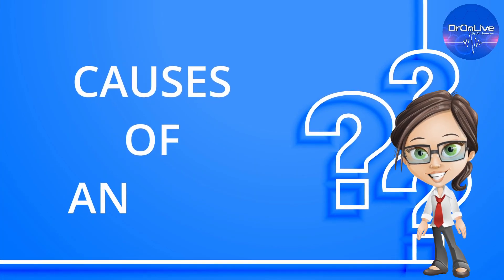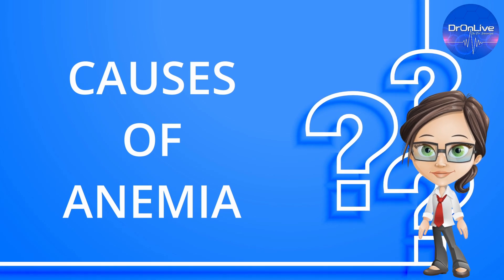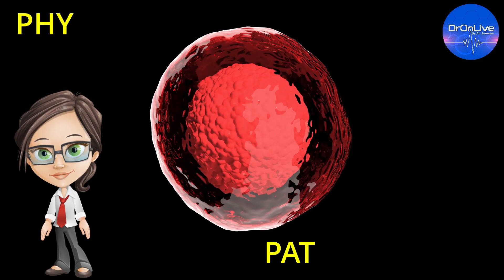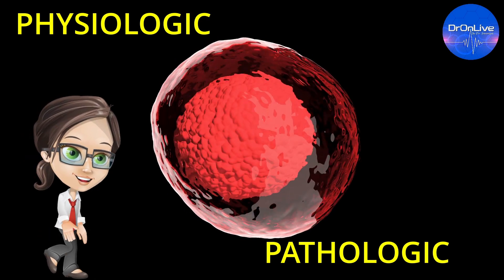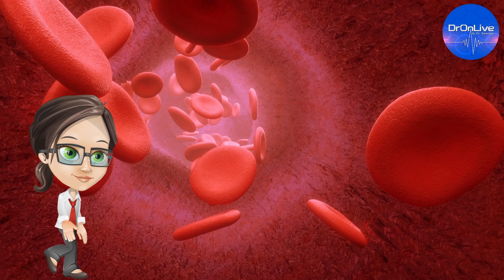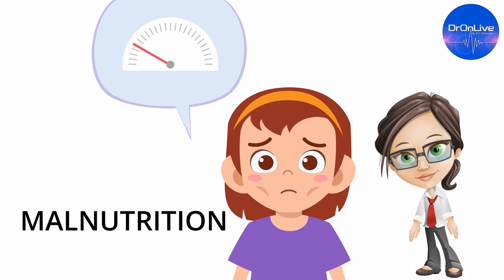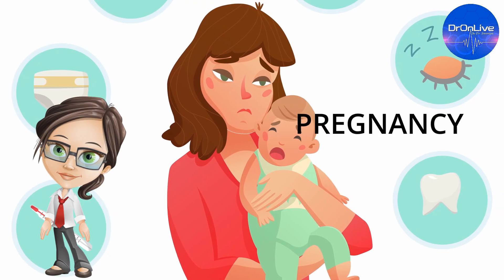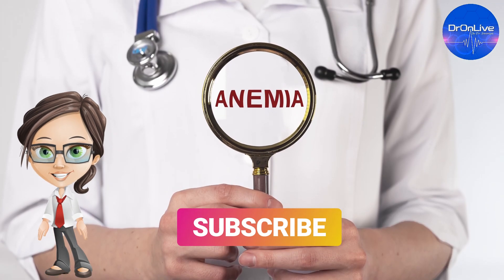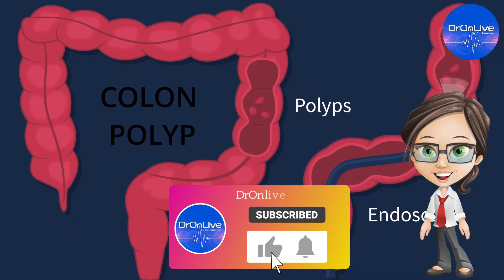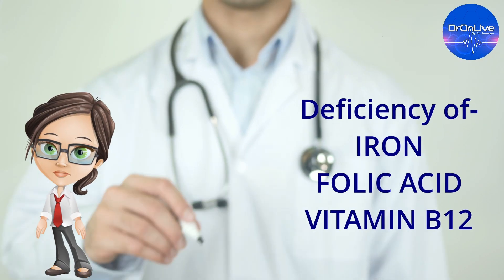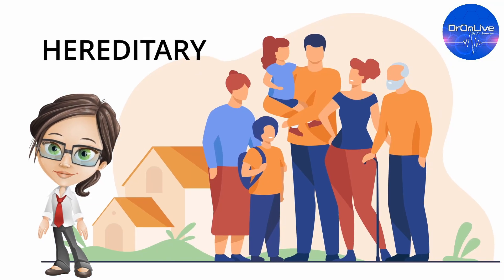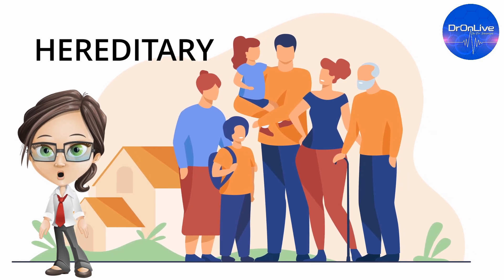Now let us discuss the causes of anemia — the conditions that can lead to it. Anemia can be caused due to physiological changes such as malnutrition in children, heavy menstrual cycles in females of childbearing age, and during pregnancy. Pathologically, anemia can be seen in people suffering from colon polyps, various types of cancer, and deficiency of iron, folic acid, or vitamin B12. Anemia can also be inherited and run in families.